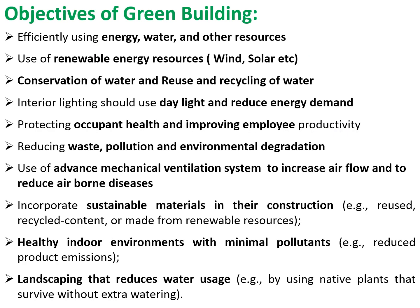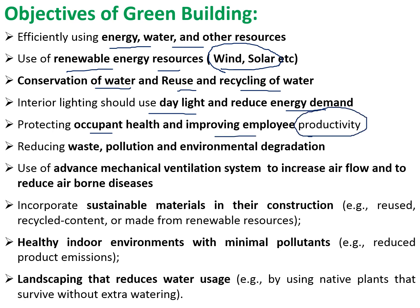The major objectives of green building are: to efficiently utilize all resources — energy, water, and other materials; use of renewable energy resources instead of non-renewable ones, such as wind and solar energy; conservation, reuse, and recycling of water; use of interior daylighting to reduce energy demand; protecting the health and lifestyle of occupants; and improving employee productivity. It should also reduce waste, pollution, and environmental degradation, and use advanced mechanical ventilation systems to increase airflow and reduce airborne diseases.